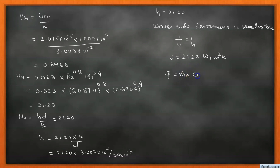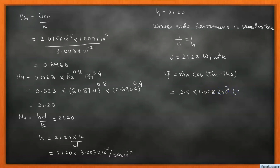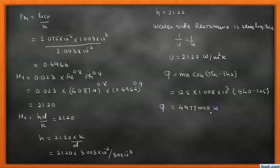Using Q = ṁ_H × Cp_H × (Th1 − Th2), we calculate the heat duty: Q = 12.5 × 1.008 × 10³ × (540 − 145) = 4,977,000 W. This is the heat duty of the heat exchanger.